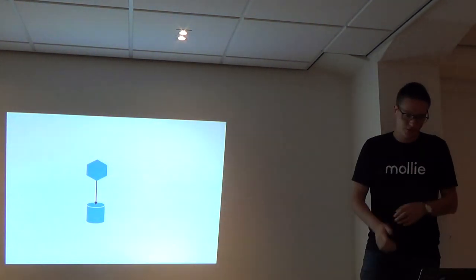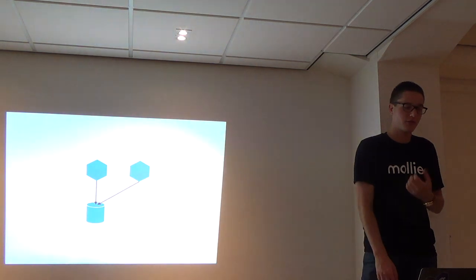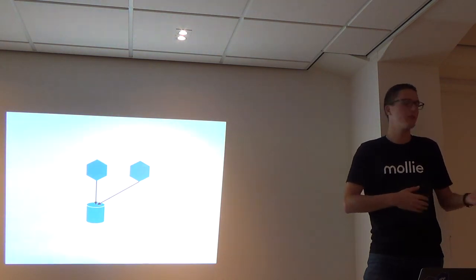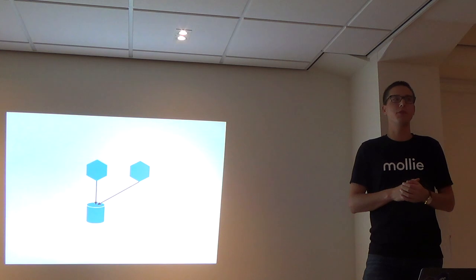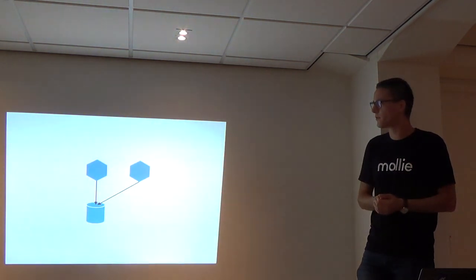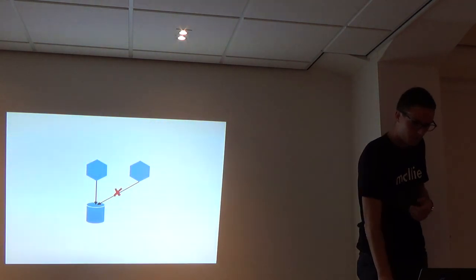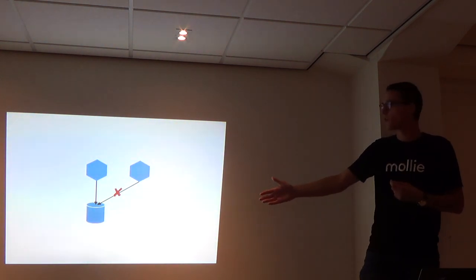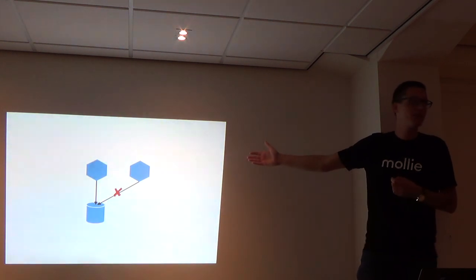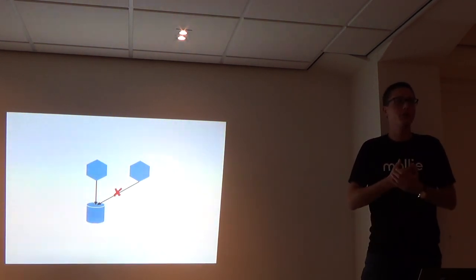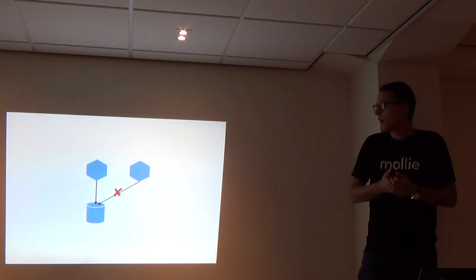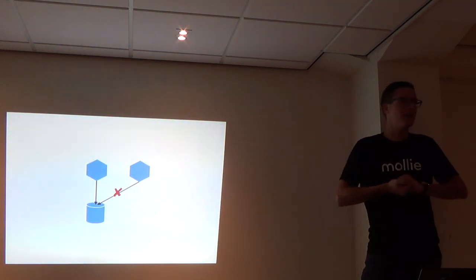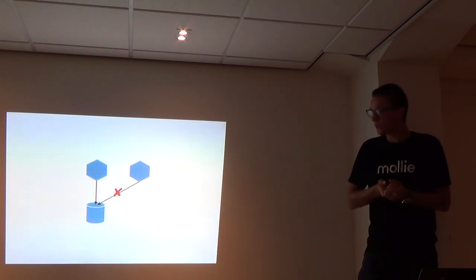Since you have interesting information in your database - maybe the customers - and this other microservice needs to read from it too because it needs the customer object - this is a very bad idea. Try to change the schema of this database: it will be very difficult to do without breaking the second service. The more services you let into the internals of your database, the more tightly coupled your system gets. This is a very bad idea.